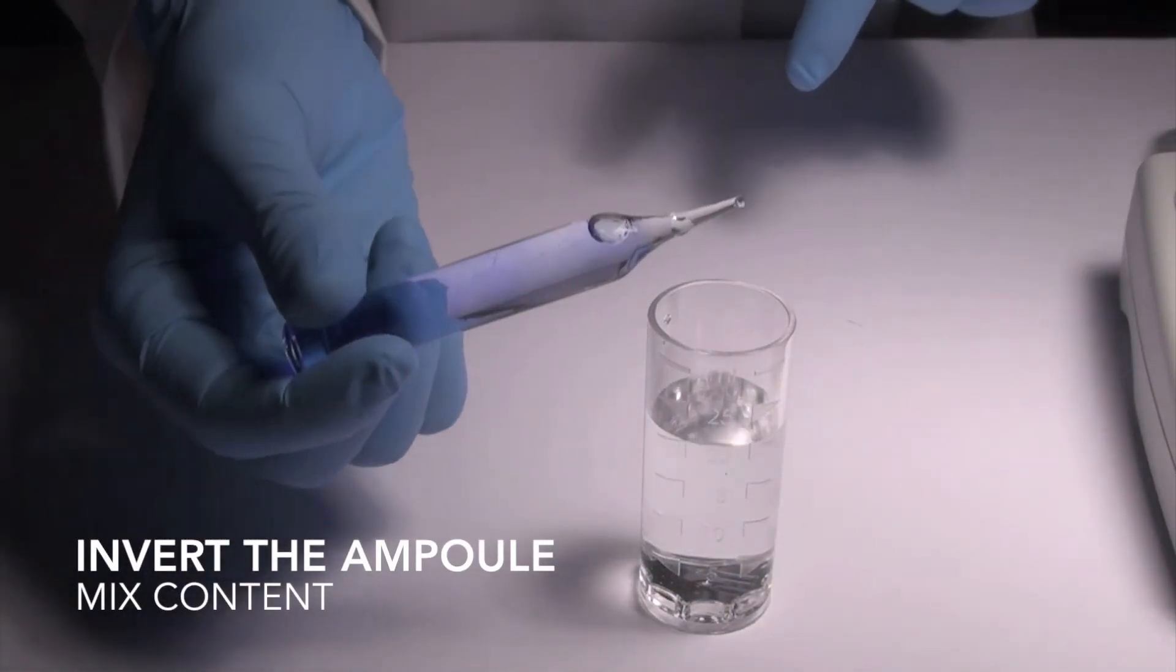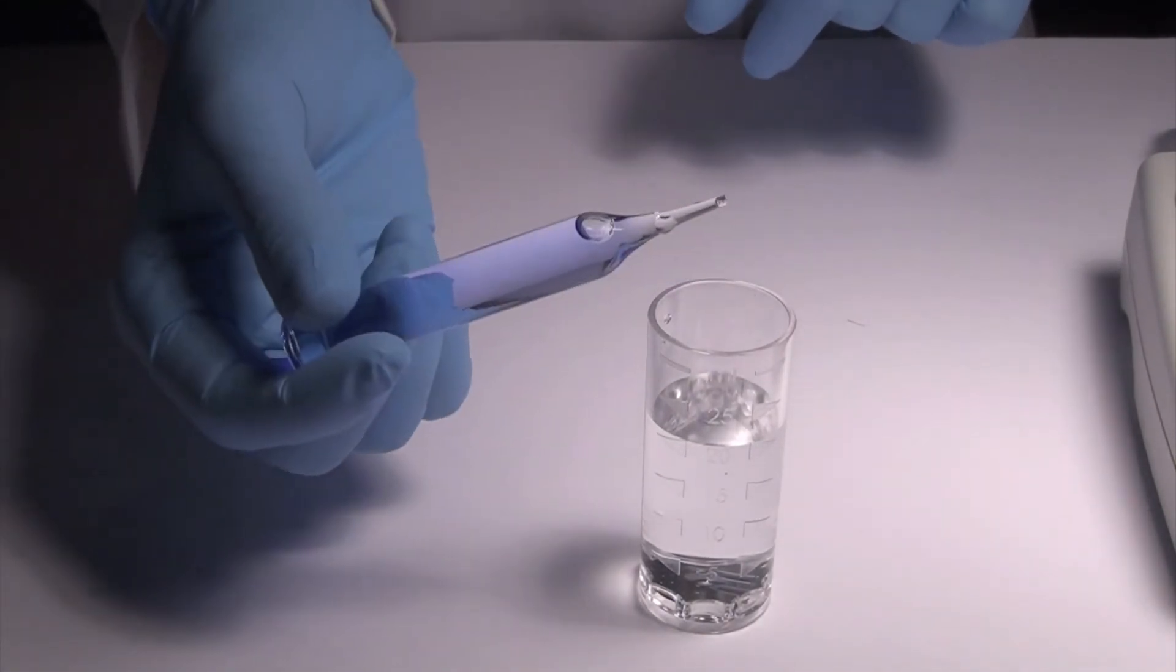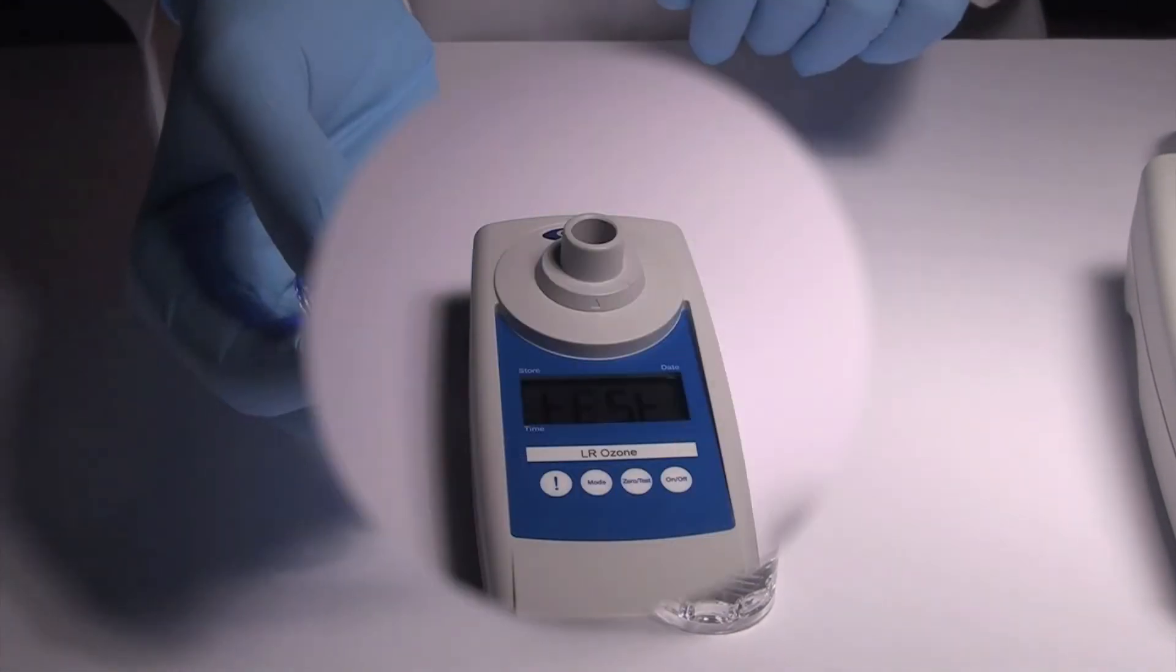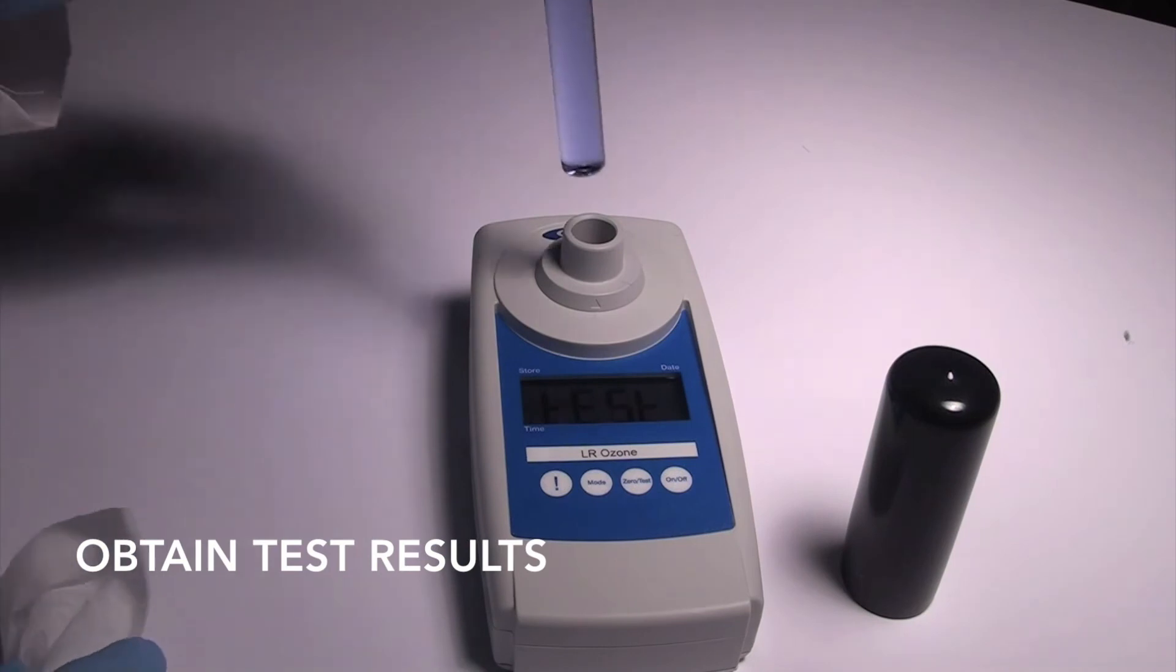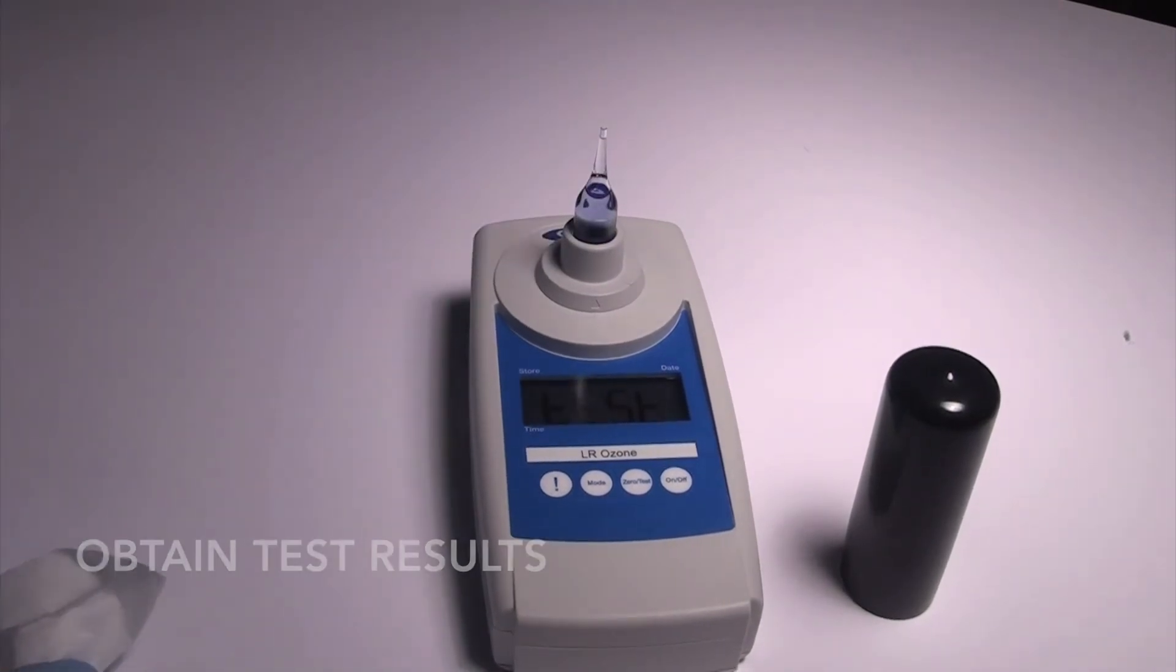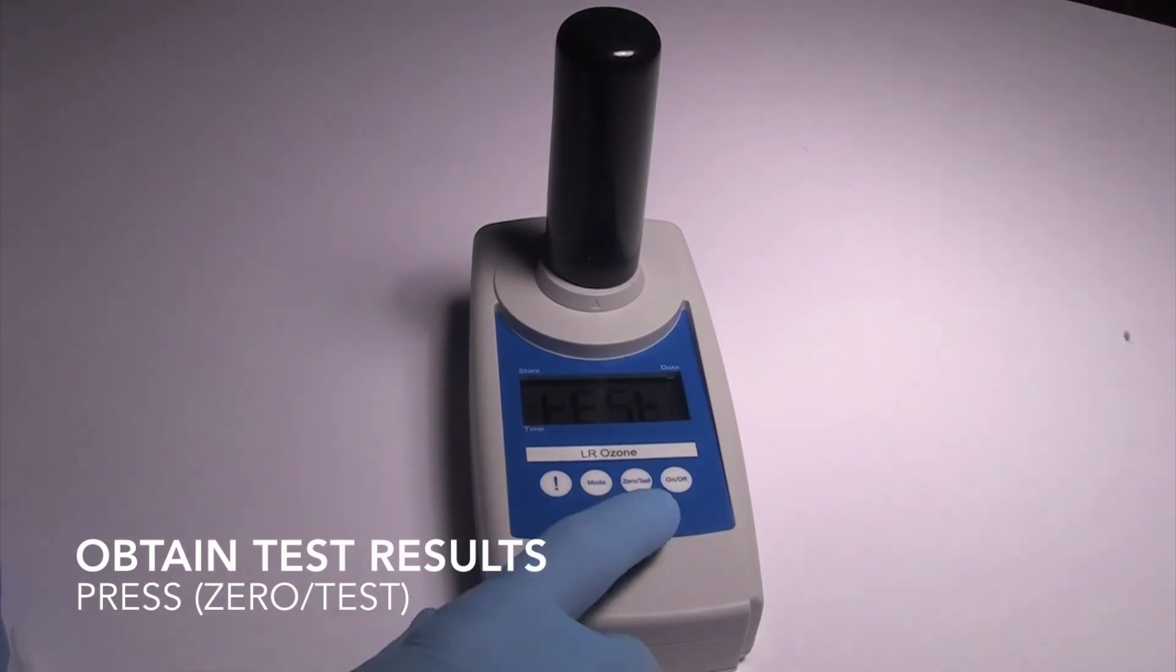Gently invert the ampoule continuously for 30 seconds, allowing the bubble to travel from end to end. Dry the ampoule and insert it into the photometer, flat end first. Place the light shield over the ampoule and press zero test. The SAM photometer will display a test result in parts per million ozone.